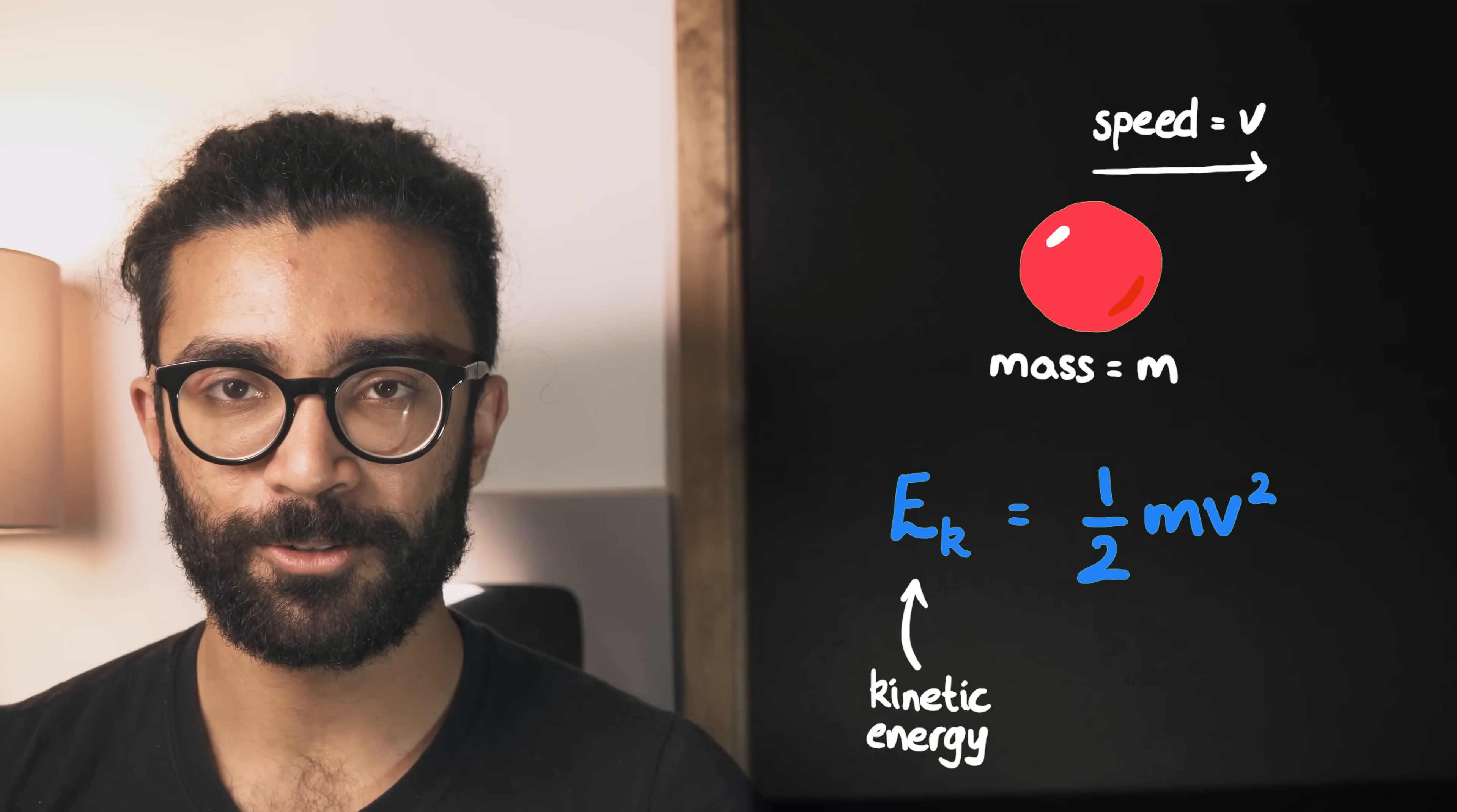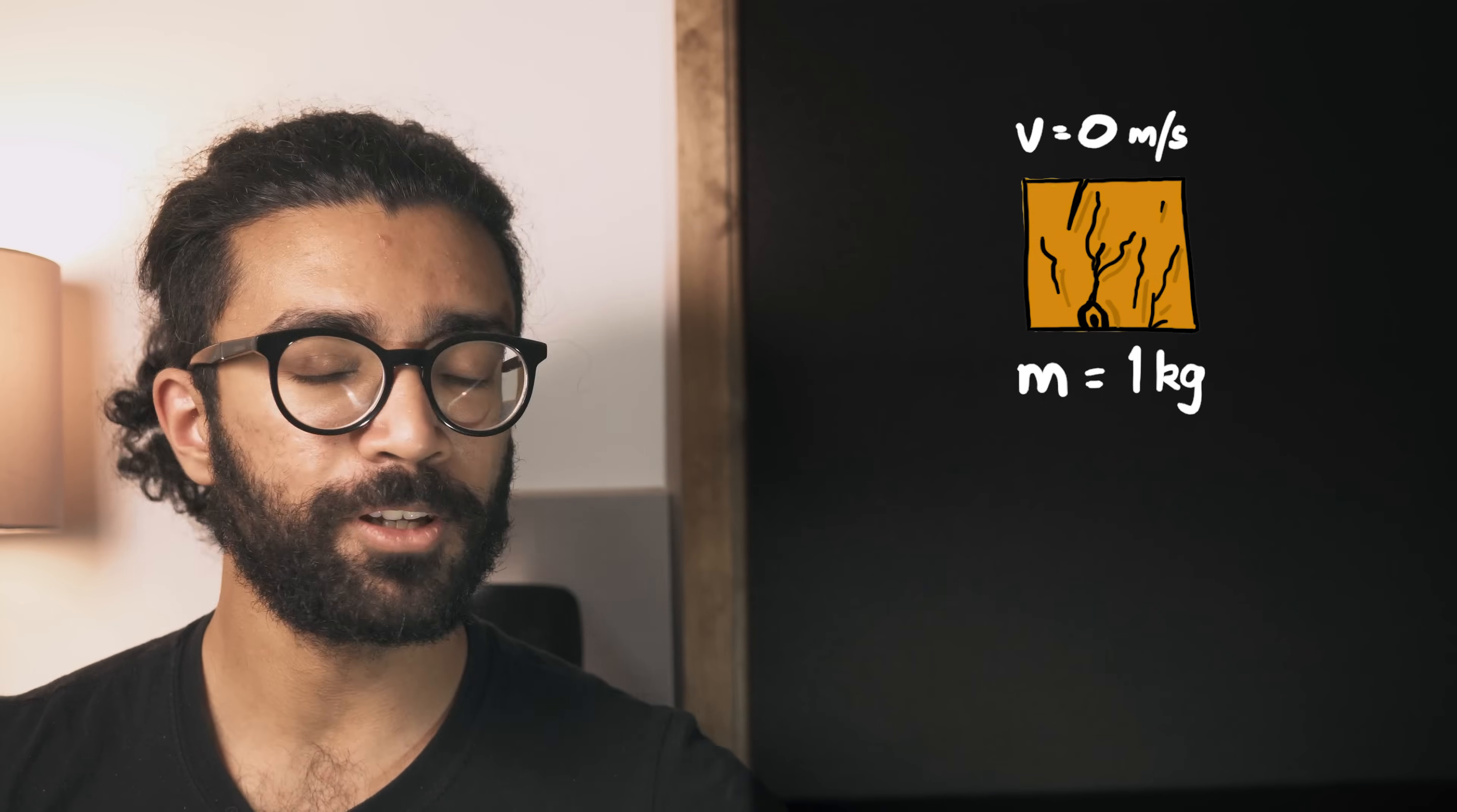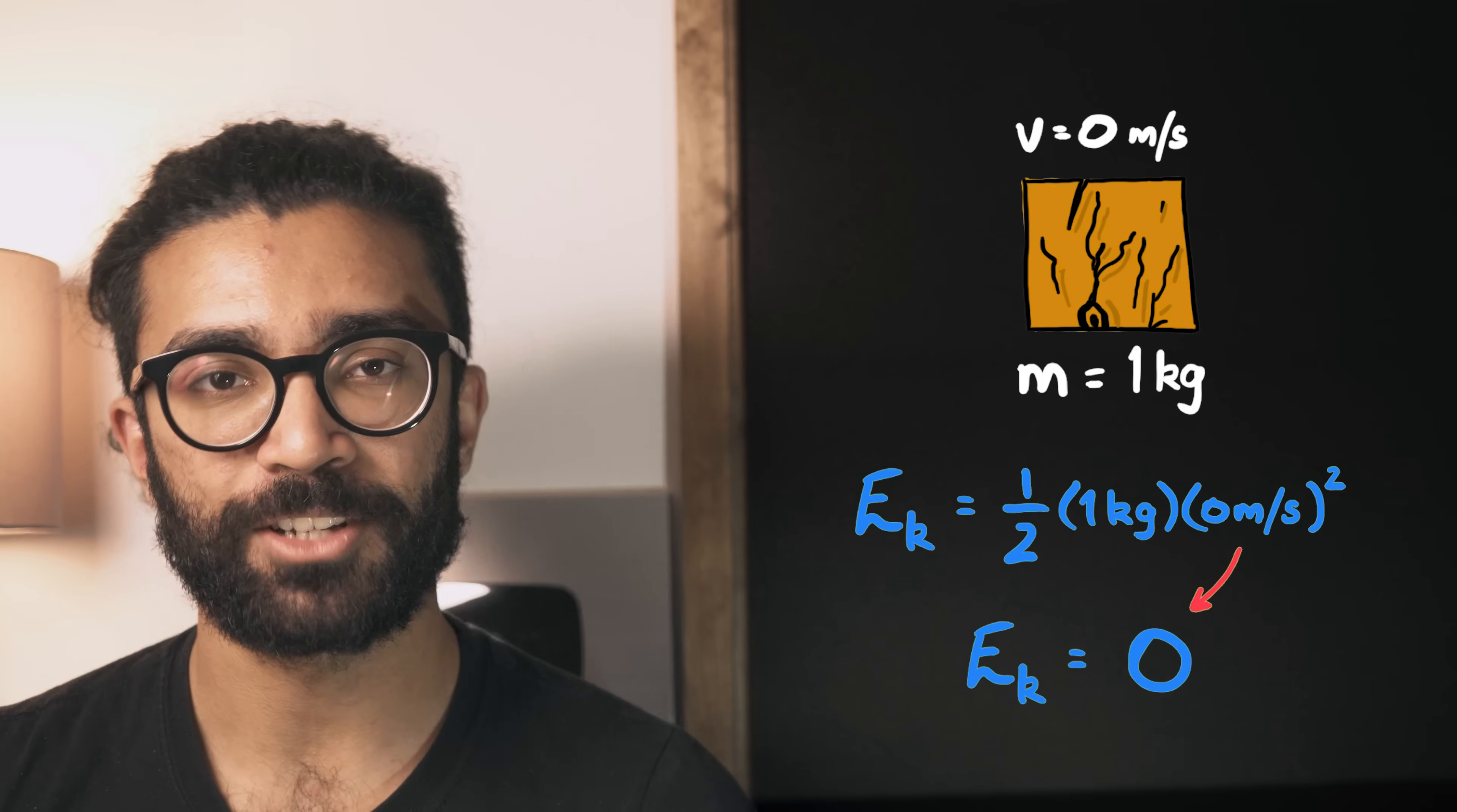So let's break this equation down. Let's say we have a wooden block with a mass of one kilogram. And initially it's stationary. In other words, it's moving with a speed of zero or it's not moving. In this case, the block has no kinetic energy, just as we expect.